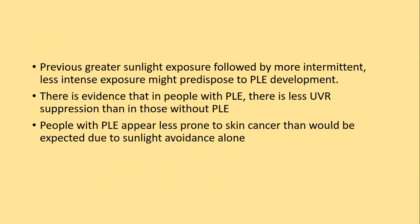Previous greater sunlight exposure followed by more intermittent, less intense exposure might predispose to PLE development. There is evidence that in people with polymorphic light eruption there is less ultraviolet radiation suppression than in those without PLE — in other words, patients with PLE are more susceptible to ultraviolet radiation-induced damage. People with PLE appear less prone to skin cancers than would be expected, due to sunlight avoidance alone, because of their inbuilt sensitivity to sunlight.